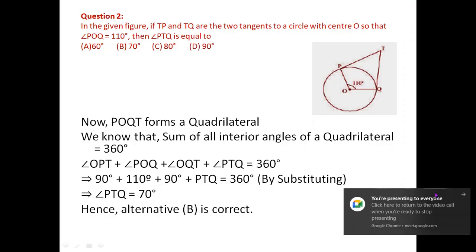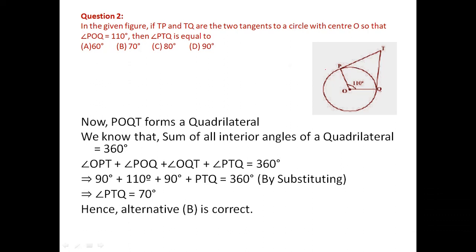Angle POQ is given as 110 degrees and we have to find angle PTQ. Remember that POQT is a quadrilateral — a closed figure with four sides. We know that angle OPT and angle OQT are both 90 degrees because the radii are perpendicular to the tangents at the points of contact. Therefore, OPT + POQ + PTQ + OQT = 360 degrees.